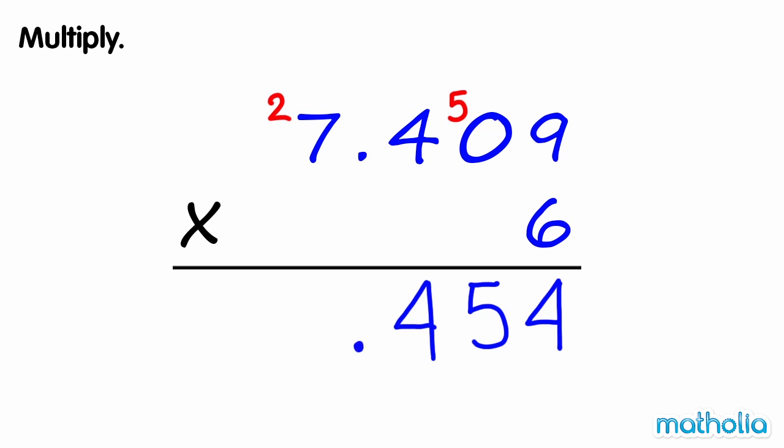Multiply the ones. 6 times 7 ones equals 42. 42 add 2 equals 44. 7.409 times 6 equals 44.454.